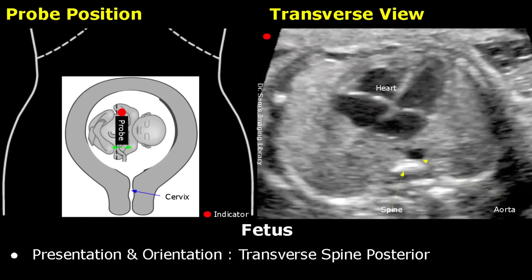In this type of transverse presentation, the fetal head is towards the left side and facing the anterior aspect of the uterus. This is an image of the heart — it will be found at this side. The stomach will also be found at this side. Thank you so much for watching. Please subscribe and stay tuned for more imaging videos.